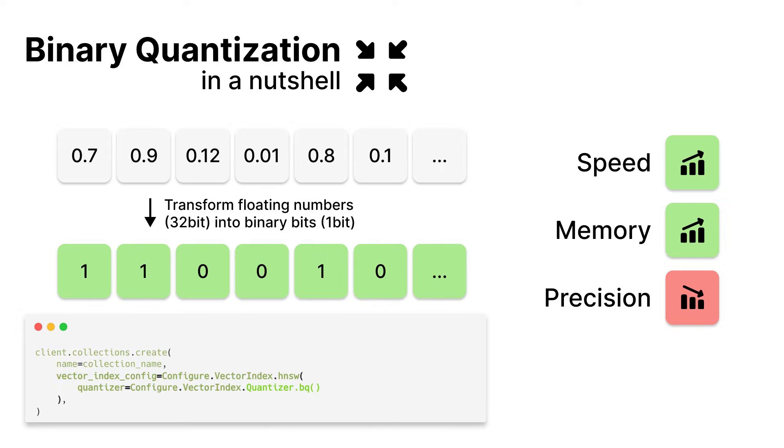In essence, embeddings are numerical representations of more complex objects like text, images, audio, etc. Specifically, the objects are represented as n-dimensional vectors.